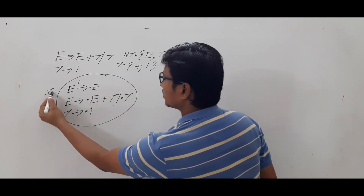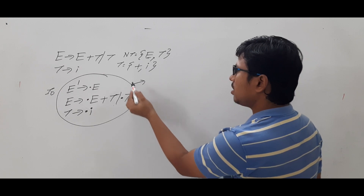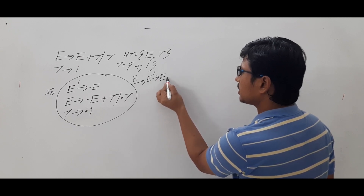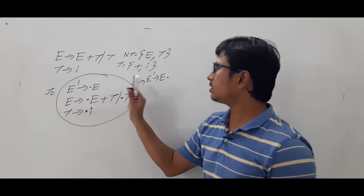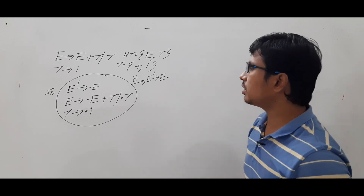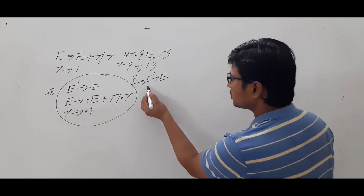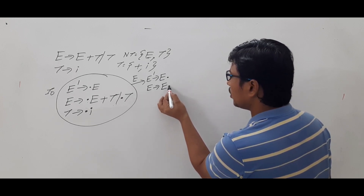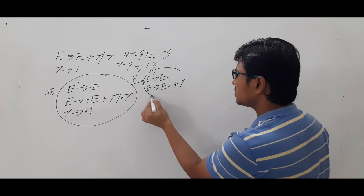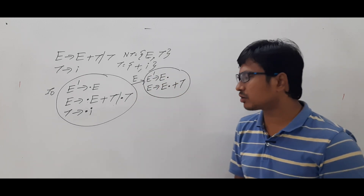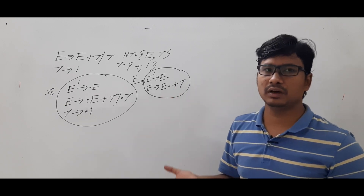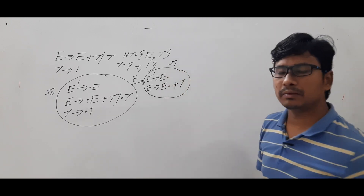Now let me compute GOTO on E. We are computing GOTO(I₀, E). Wherever dot E is present, we shift the dot past E. So E' → E• comes, and also E → E• + T. Since after the dot there is a terminal (plus), we do not compute the closure for a terminal. This is our item I₁.